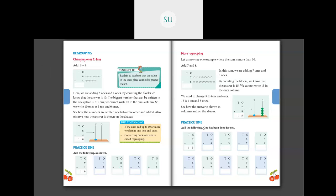Next page: six plus eight is fourteen — so we separate it as one ten and four ones, written as 14. Seven plus five is twelve — two ones and one ten. Seven plus eight is fifteen — five ones and one ten. Six plus nine is also fifteen — five ones and one ten. The last five questions on page number 95 you will do for homework.